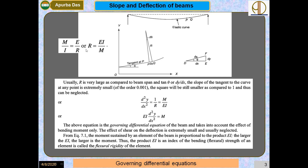From the pure bending equation, r = EI/M, so 1/r = M/EI. Therefore we can write EI · d²y/dx² = M. This is the governing equation for the beam, which takes into account the effect of bending moment only. The effects of shear on deflection are extremely small and are usually neglected.